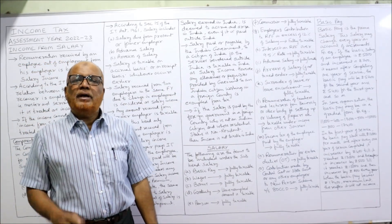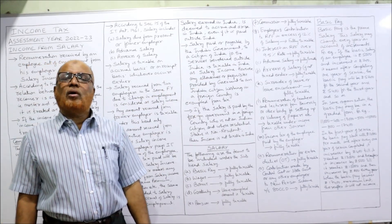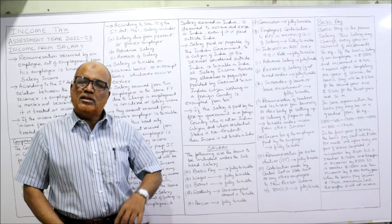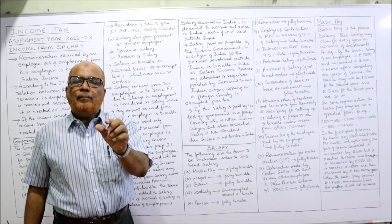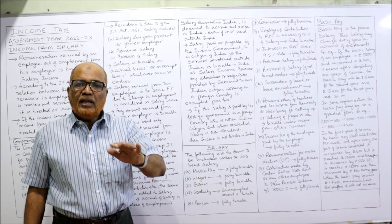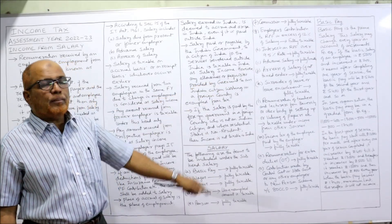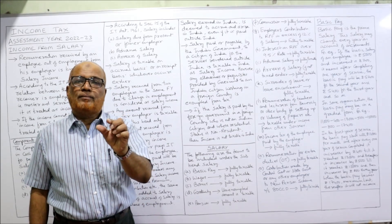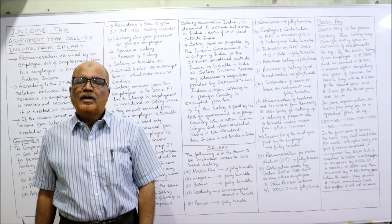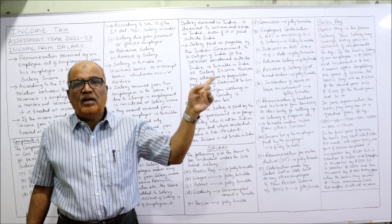Commission: if the employer pays commission to the employee, it is fully taxable under the subhead salary. Then, employer's contribution to RPF — Recognized Provident Fund. If the employer contributes to RPF in excess of 12% of salary, that excess is fully taxable. Interest on RPF: if the rate of interest is up to 9.5%, it is not taxable. If the rate of interest is more than 9.5%, it is fully taxable.